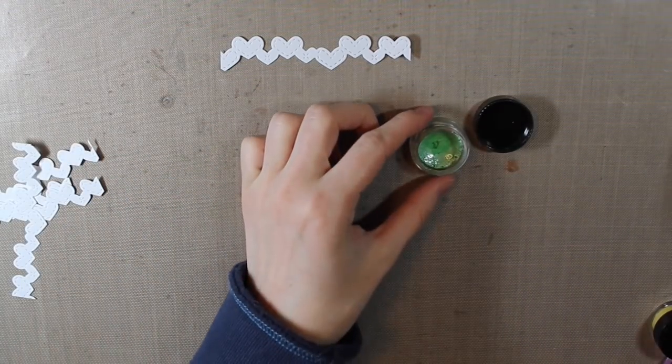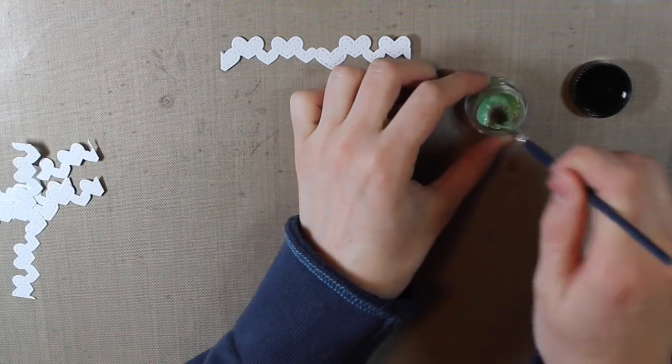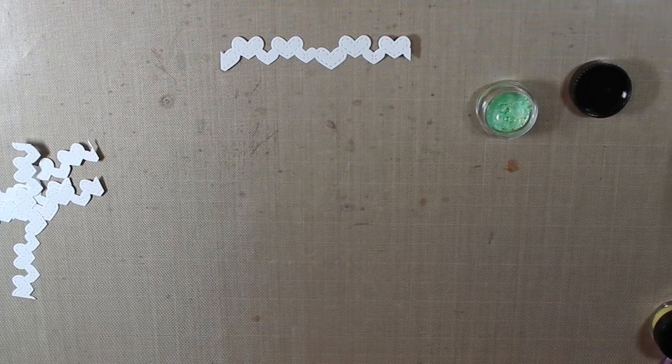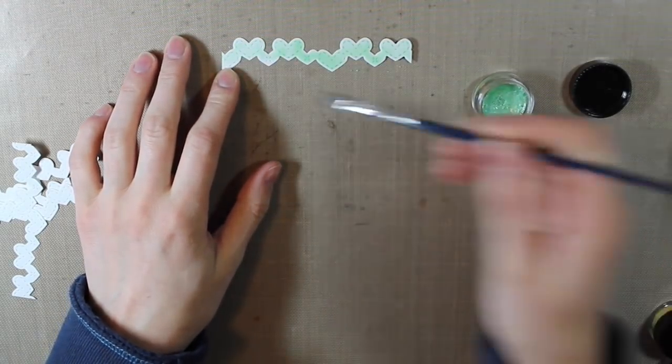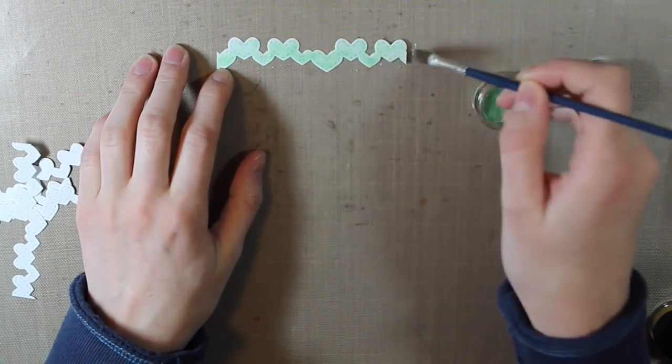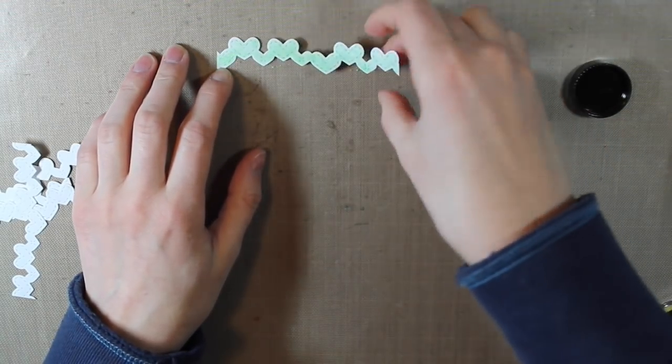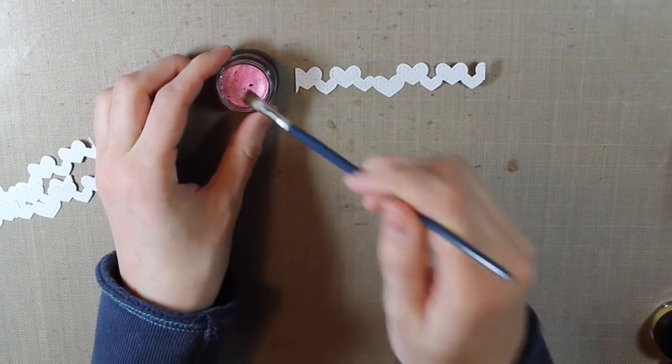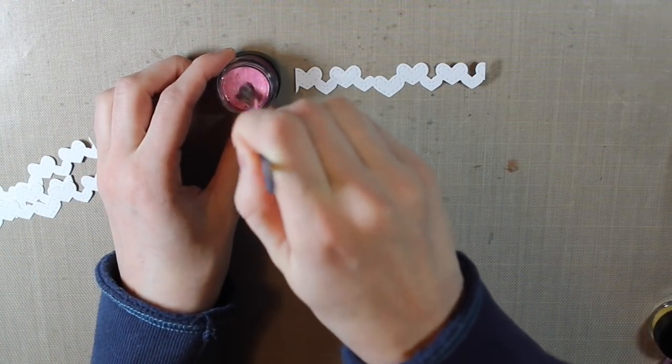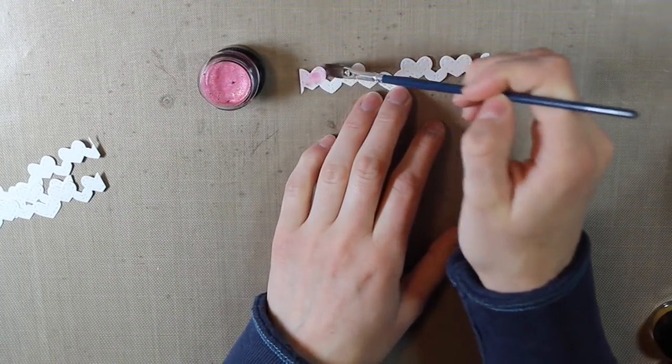I'm going to be coloring these with my twinkling H2O's. I'm starting with the summer breeze green color, adding a little bit of water into each of these pots of watercolor. These are cool watercolors because they have that twinkling shimmer look to them.